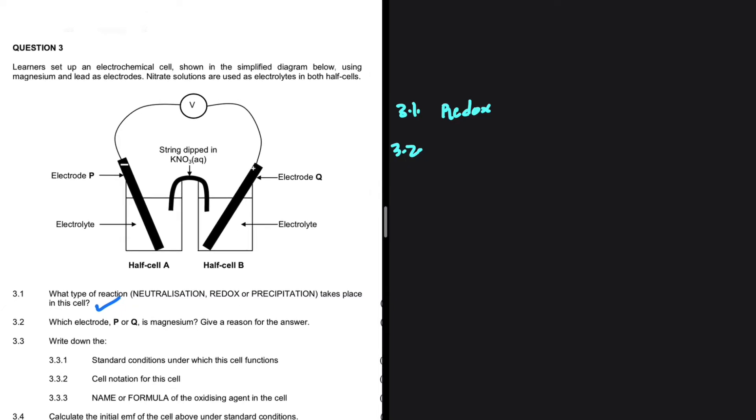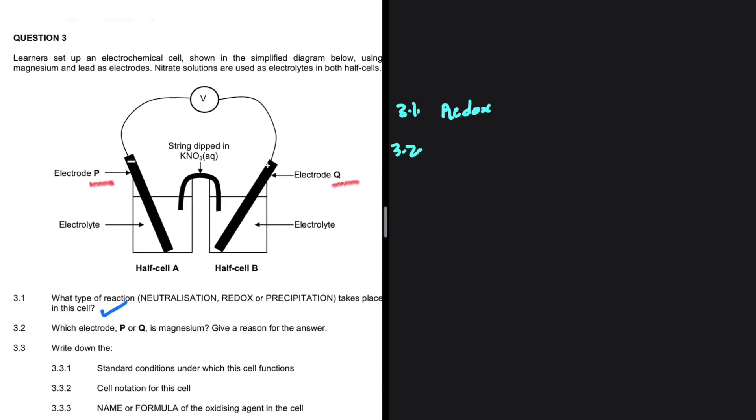We have electrode P and electrode Q. P is negative and Q happens to be positive.